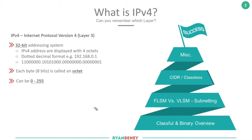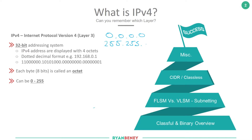This means that IP addressing can range from 0.0.0.0 all the way up to 255.255.255.255. Each octet can be a zero or it can be a 255.